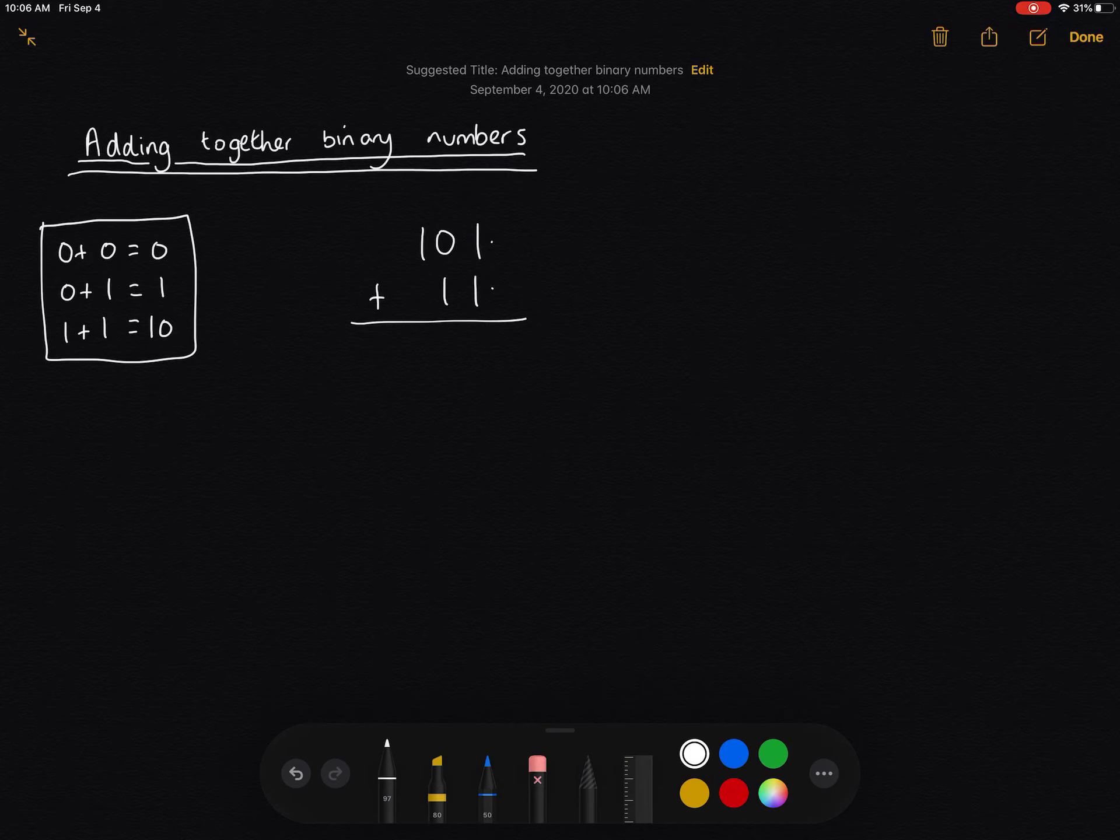Alright, well, binary numbers are exactly the same. So we've got 1 and 1, that gives us 1, 0. So we're going to write down the 0 and carry the 1. Now I like to write my carry bit down here. Okay, so we've written down the 0 and we've carried the 1.